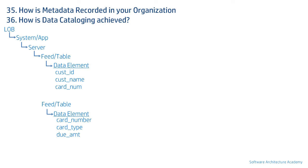How is business information derived from these? Ideally, a business name and definition should be discovered first, and physical models or data elements derived from that. However, since data governance and metadata management are relatively newer concepts, millions of data elements exist without business information. Hence we discuss mapping technical metadata to business metadata instead of the other way around.